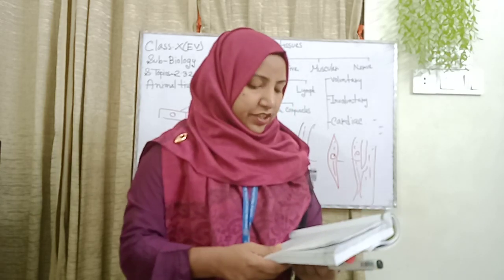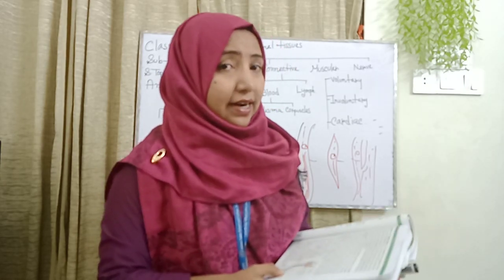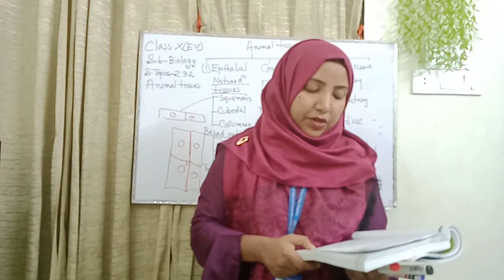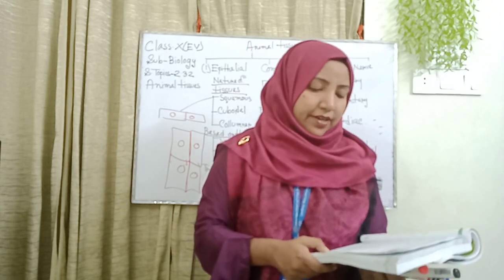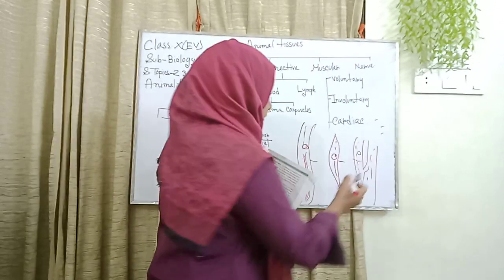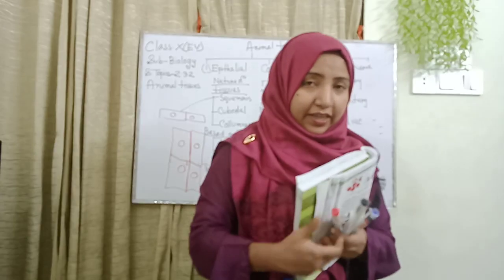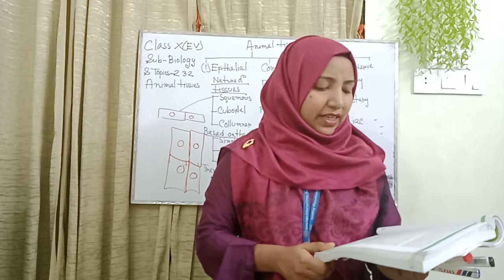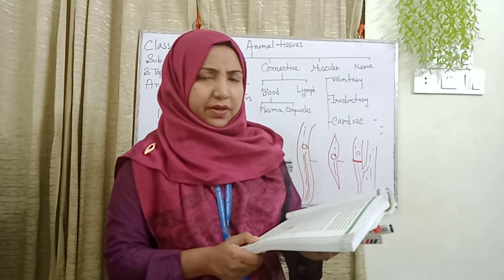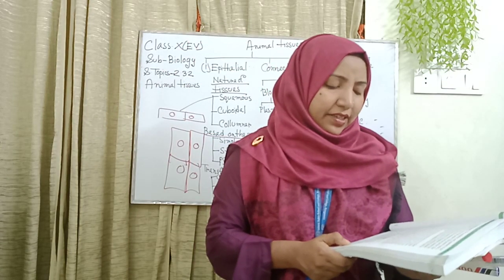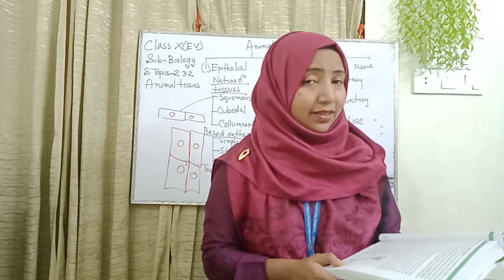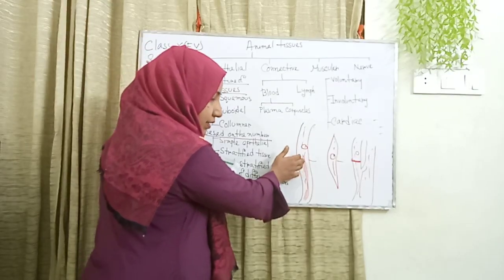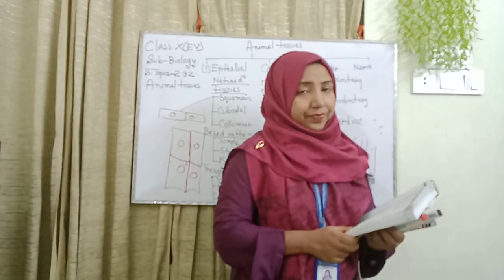Cardiac muscle is a special type of involuntary muscle that forms the heart of vertebrate animals. The cells of cardiac muscle tissue are tubular and branched, and have transverse striations. Between the cells, intercalated discs are present. The contraction and relaxation of cardiac tissue is not dependent on the will of the animal. Interestingly, the structure of cardiac muscle is like voluntary muscle, but the function is like involuntary muscle.